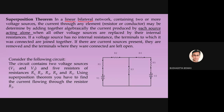Remember this carefully — I'll ask you in the viva: what is a linear element, what is a bilateral element, and what is a linear bilateral network. In a linear bilateral network containing two or more voltage sources, the current through any element or conductor may be determined by adding together algebraically the currents produced by each source acting alone. Now consider a circuit with five resistances R1 to R5 and two voltage sources V1 and V2. Since all elements are linear bilateral and two voltage sources are present, we can apply the superposition theorem.